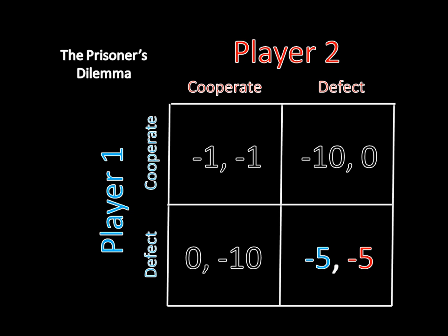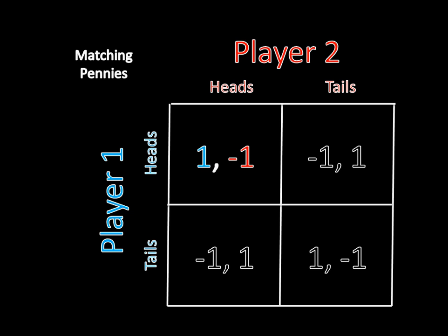Now let's try applying our method for finding pure strategy Nash Equilibria to matching pennies. We start by assuming no one would want to change their strategy if each player chose heads — and it's thoroughly obvious this is not going to be an Equilibrium, because Player 2 benefits from deviating to tails. Checking heads-tails, this isn't an Equilibrium either, because Player 1 can profitably deviate to tails. Checking tails-tails, Player 2 has a profitable deviation to heads. And for the final pair, tails-heads, Player 1 would want to deviate to heads. So we have no pure strategy Nash Equilibria.